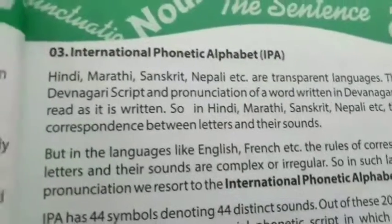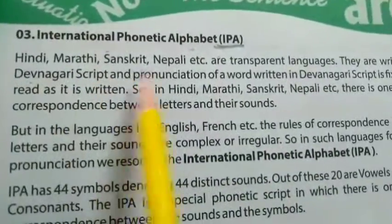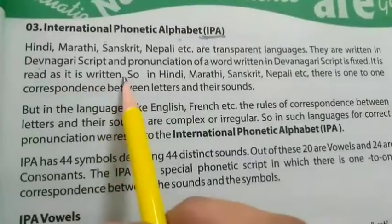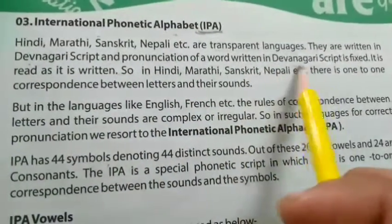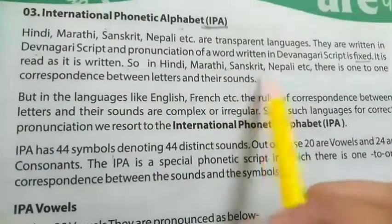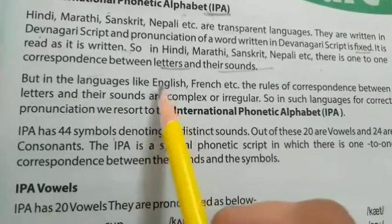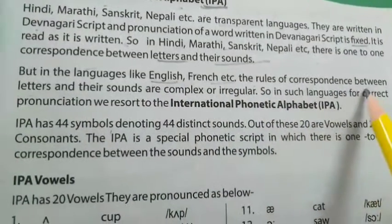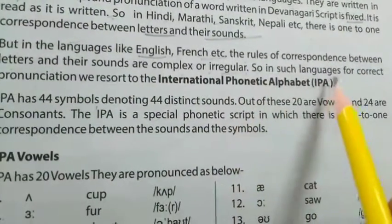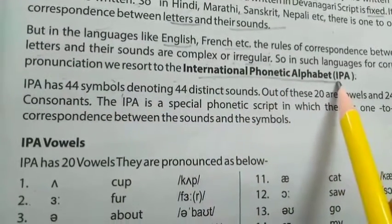Now let's look at the international phonetic alphabet. Languages like Hindi, Marathi, Sanskrit, and Nepali are transparent languages written in Devanagari script — pronunciation of a word is fixed and it is read as it is written. There is a one-to-one correspondence between letters and their sounds. But in English and French, the rules of correspondence between letters and sounds are complex and irregular. So for correct pronunciation, we resort to the international phonetic alphabet.